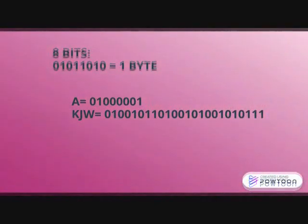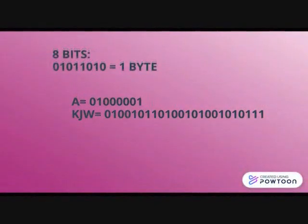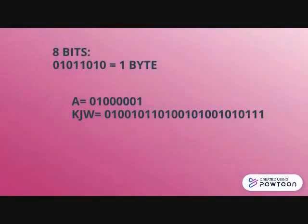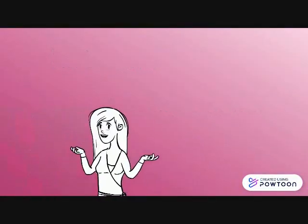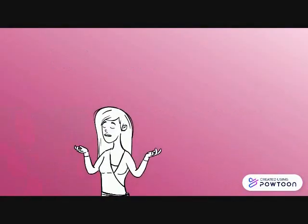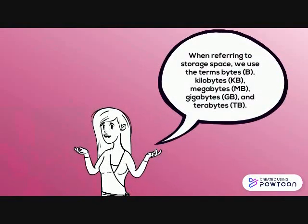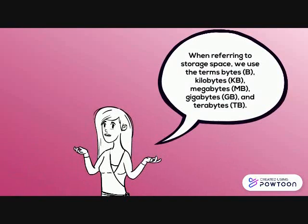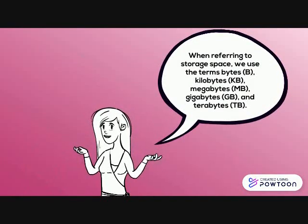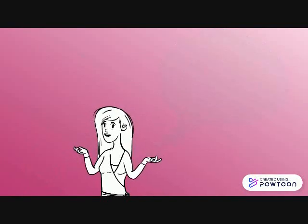The number of bits we have determines how much information we can store. It simply means that if a single letter has a value of 8 bits, it is equivalent to 1 byte. So if you type a short story with a thousand words, this will require thousands of bytes. When referring to storage space, we use the terms bytes, kilobytes, megabytes, gigabytes, and terabytes.